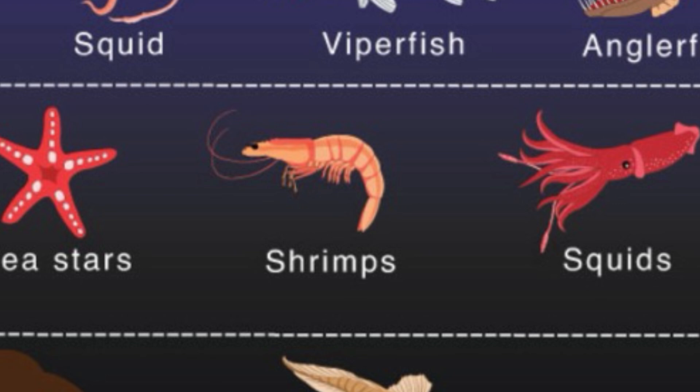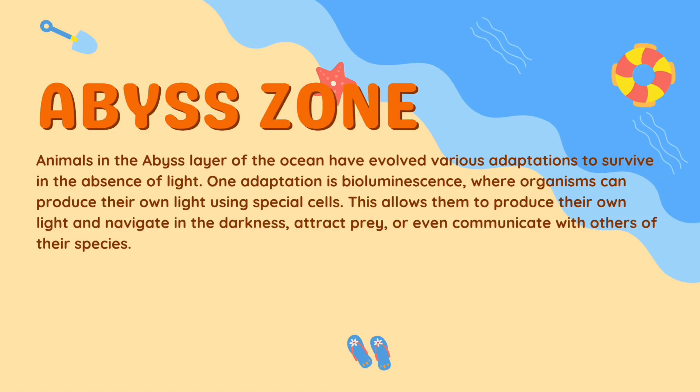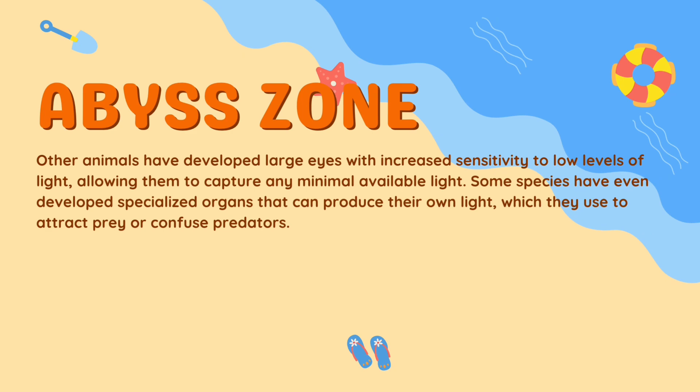Animals in the abyss have evolved various adaptations to survive in the absence of light. One adaptation is bioluminescence, where organisms produce their own light using special cells — allowing them to navigate in the darkness, attract prey, and communicate with others of their species. Other animals have developed large eyes with incredible sensitivity to low levels of light. Some species have even developed specialized organs that produce their own light to attract prey or confuse predators.